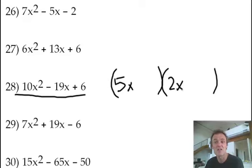There you go. That is 10x squared. 5x and 2x. 10x squared. 6 at the end. Now, 3 and 2 could be 6 and 1. But now look at this.